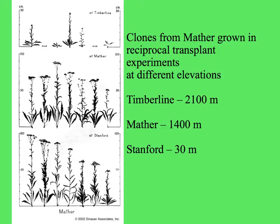For the reciprocal transplant experiments, they moved clones of one plant to different elevations. Here are clones from Mather, the intermediate site, grown at different elevations. The same clone grown at Mather got a little taller when grown at Stanford, or shorter at higher elevations. Some individuals showed that same pattern, but couldn't survive at the highest elevation — they died. From this, they could conclude that some differences were genetically based, but others were simply the result of the environment acting on the plants.